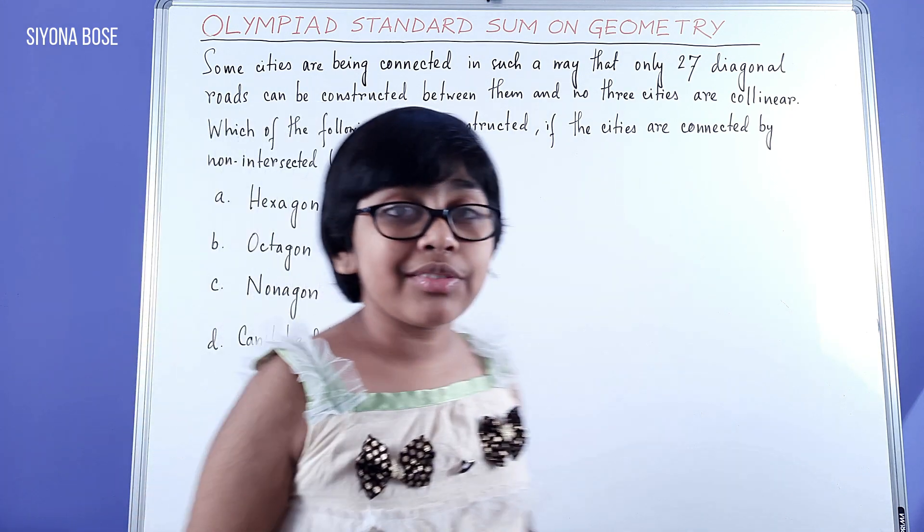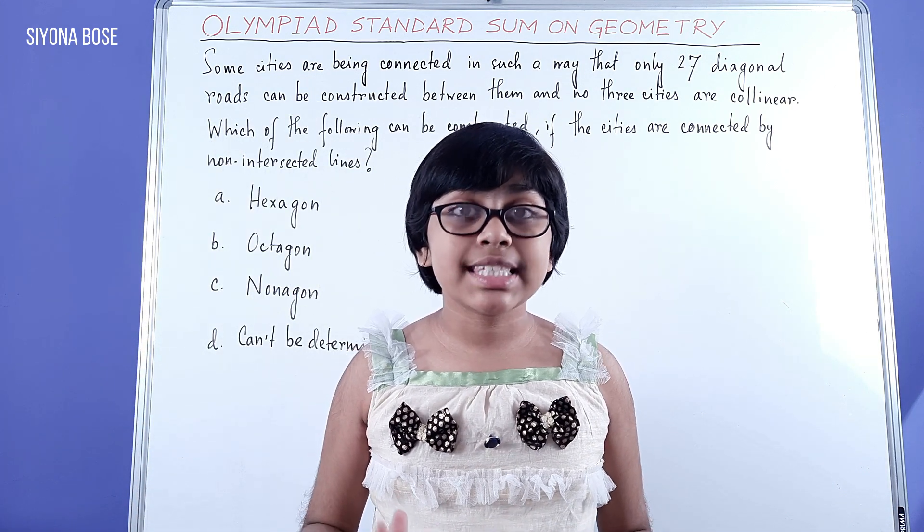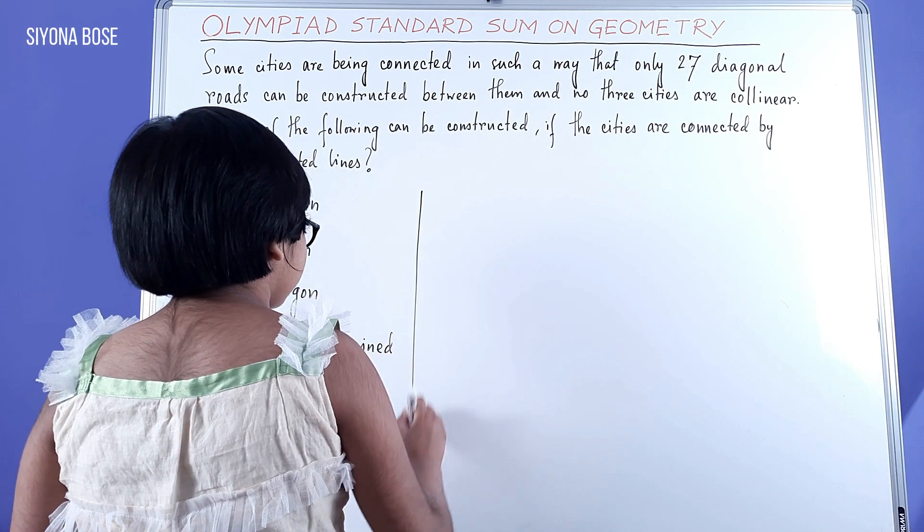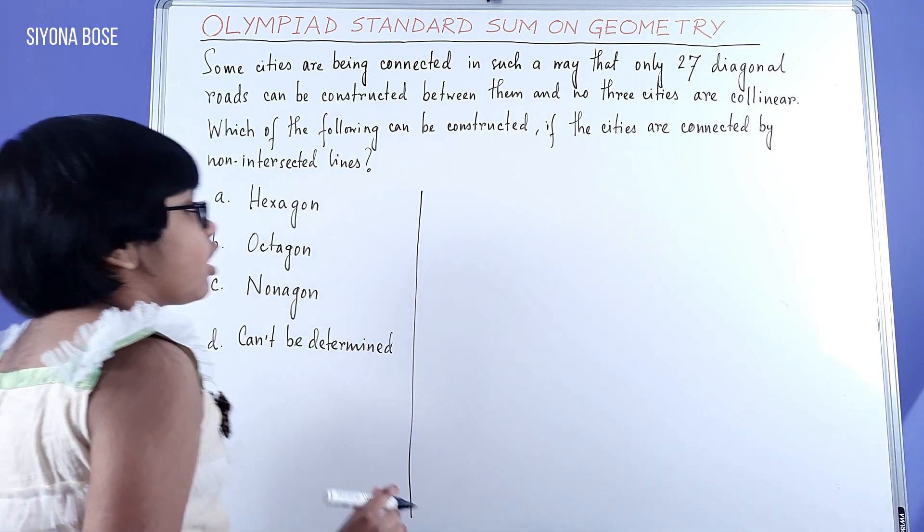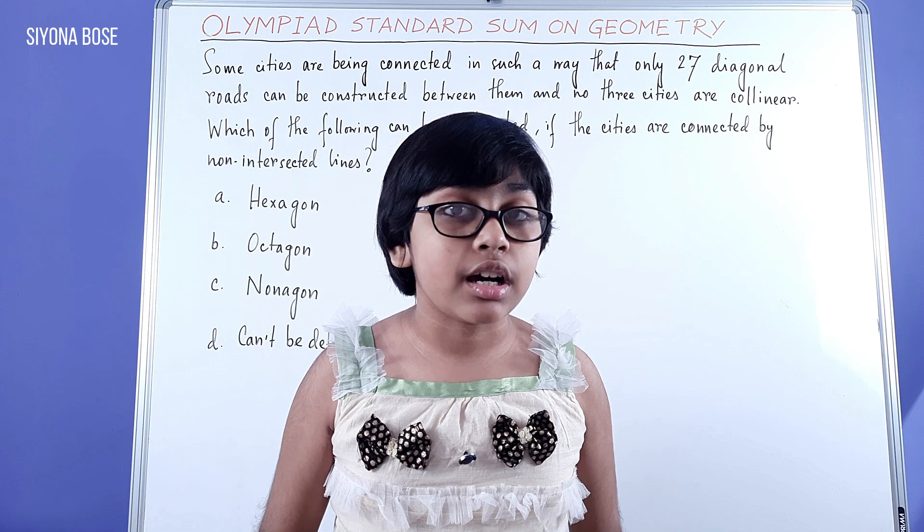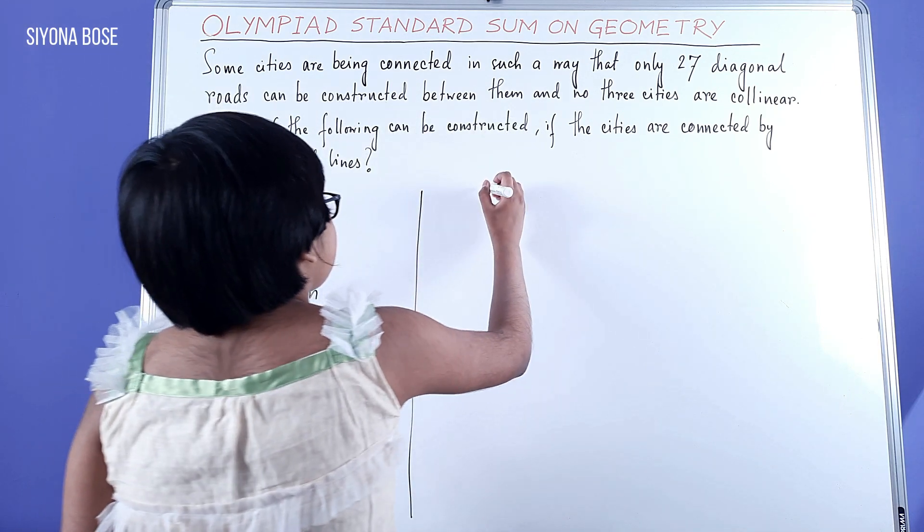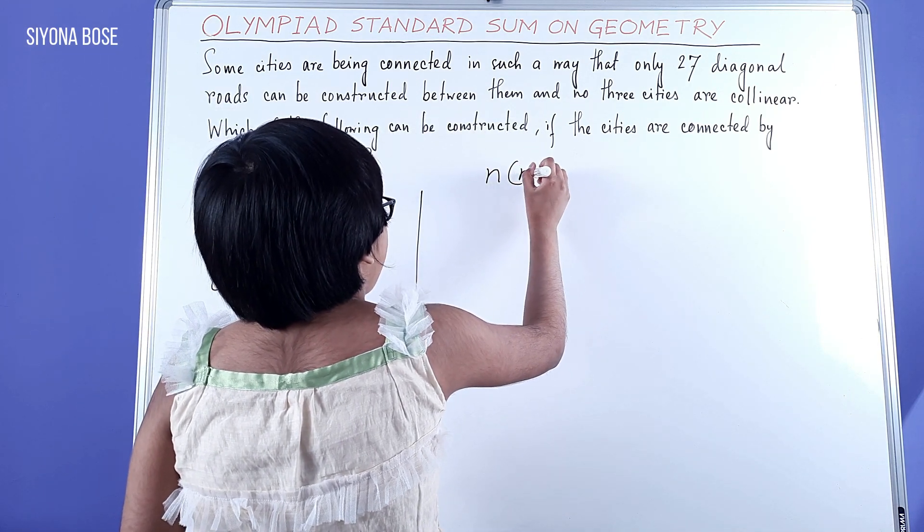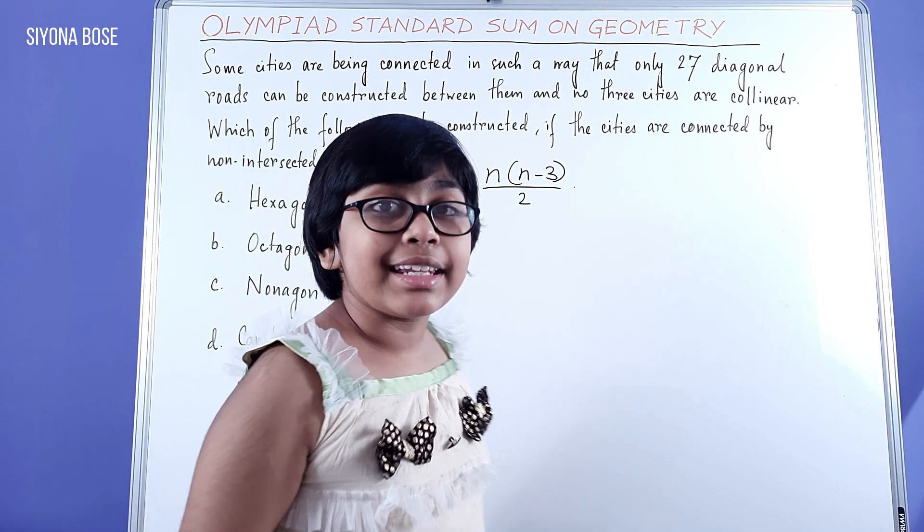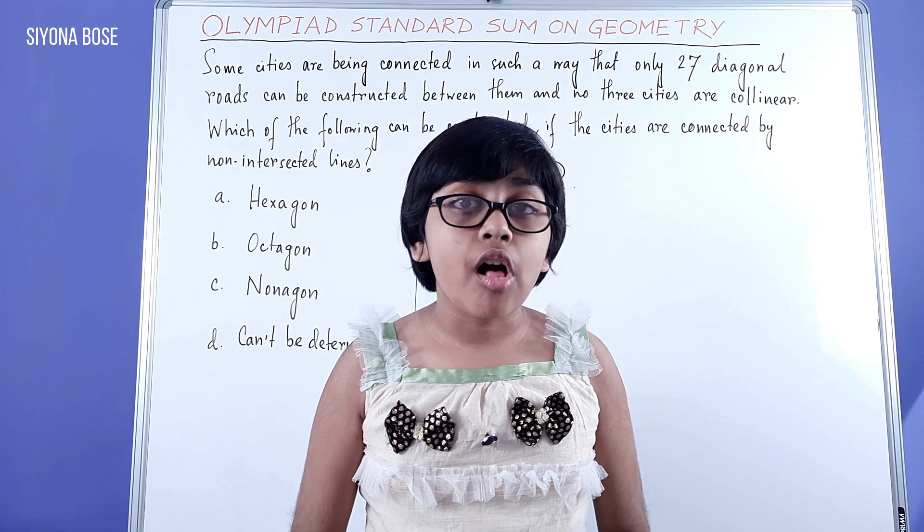Okay, before we begin, I have to discuss something very important. There is a formula to determine the number of diagonals in any polygon, that is n into n minus three, the whole by two, where n is the number of sides in the polygon.